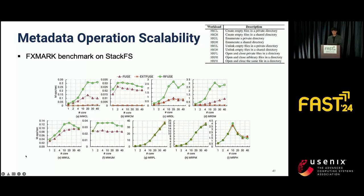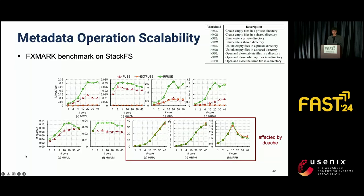To evaluate metadata operation scalability of RFuse, we ran the Filebench benchmark on StackFS deployed on FUSE, ExtFuse, and RFuse. RFuse consistently demonstrates better throughput and scalability compared to FUSE and ExtFuse across various workloads. In unlink workloads, we failed to measure ExtFuse throughput because it returned errors in our environment. For open-intensive workloads, all frameworks show similar throughput and scalability because these workloads operate on a directory structure with a depth of 5, where path traversal becomes the primary operation — heavily dependent on VFS layer details with little variation among frameworks.